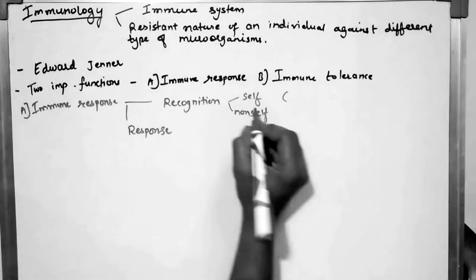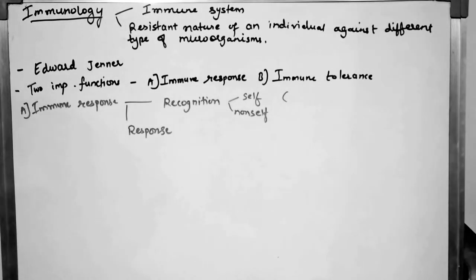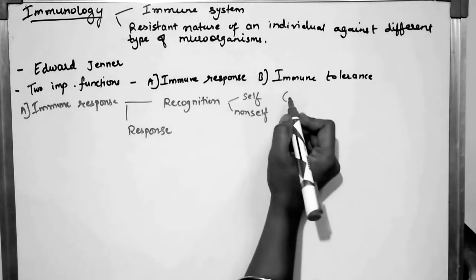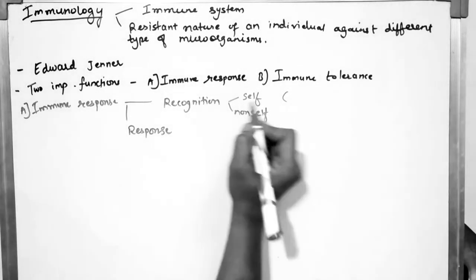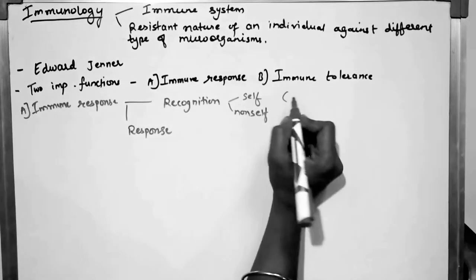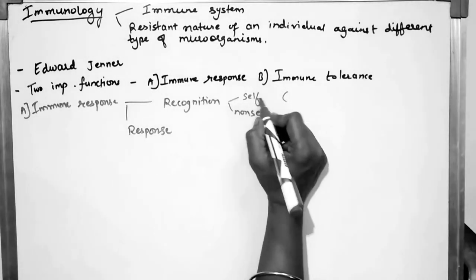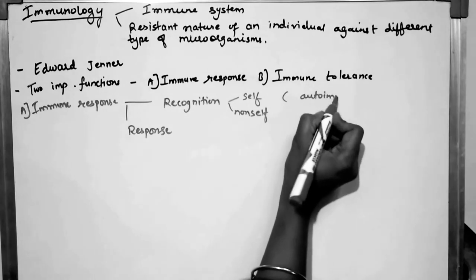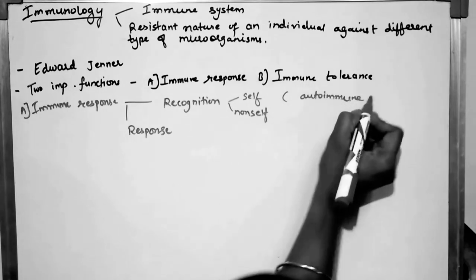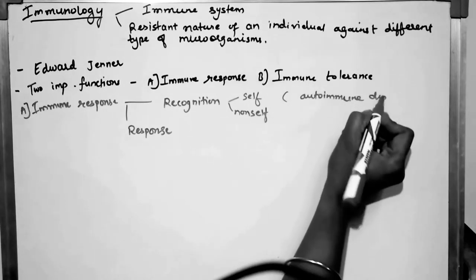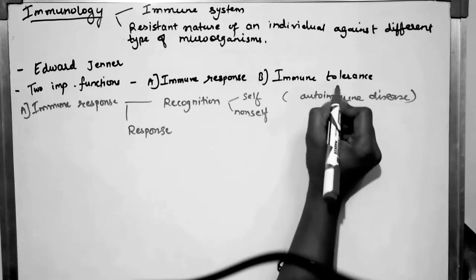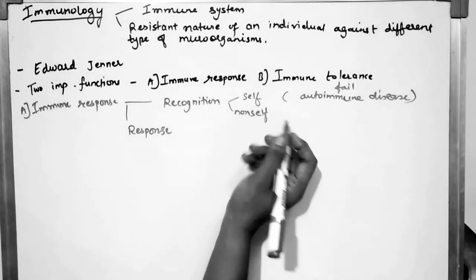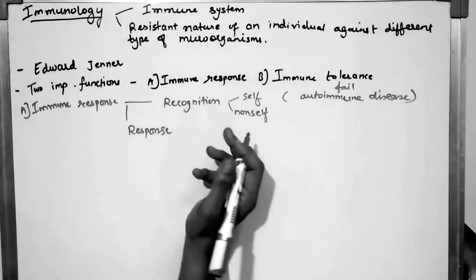Sometimes what happens is the cell is actually our own self-cell, but the immune system fails to recognize it. That will lead to autoimmune diseases. If it fails to recognize itself as a self-cell, then it will mount a response against it.